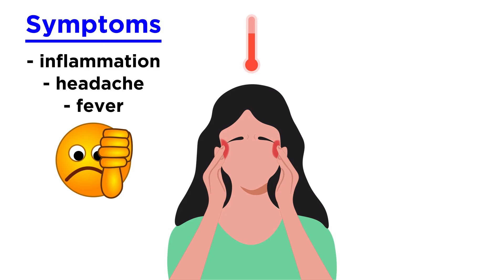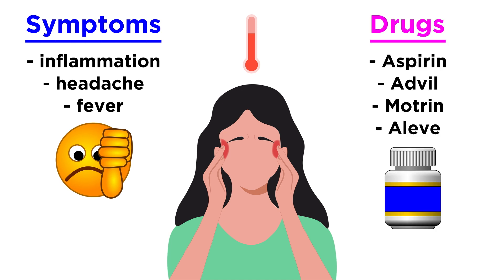We've all experienced the aches and pains of inflammation, headache, and fever, as these are a part of life. To relieve these symptoms, millions of us reach for common over-the-counter medicines like aspirin, Advil, Motrin, and Aleve. But where did these drugs come from, and how do they work?